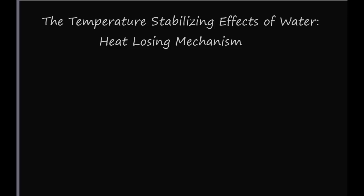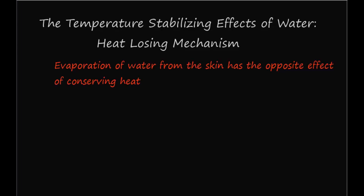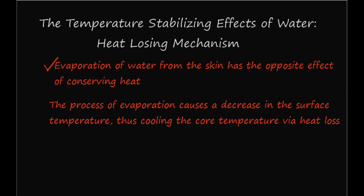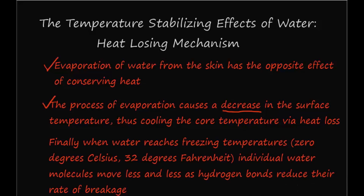Using the same property of its temperature stabilizing effects, water is also capable of achieving the opposite effect of heat conservation — namely the ability to cause heat loss. Evaporation of water from the skin has the opposite effect of conserving heat; the process of evaporation causes a decrease in the surface temperature of water. When water reaches freezing — 0 degrees Celsius or 32 degrees Fahrenheit — individual water molecules move less and less as hydrogen bonds reduce their rate of breakage. They become a rigid lattice pattern of bonding, though this lattice is less dense than liquid water and can therefore float on top of water.